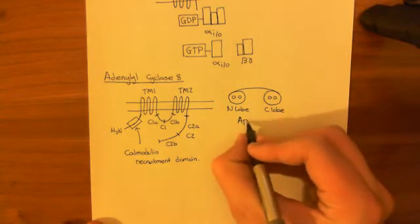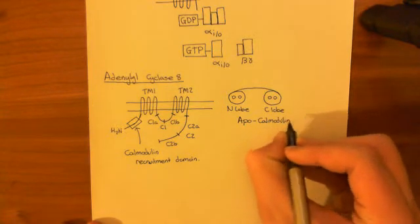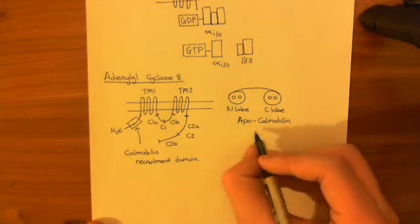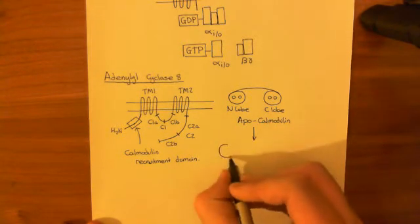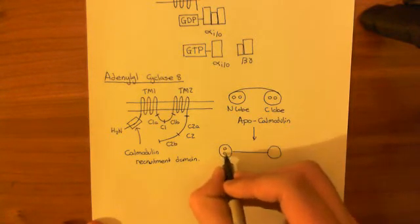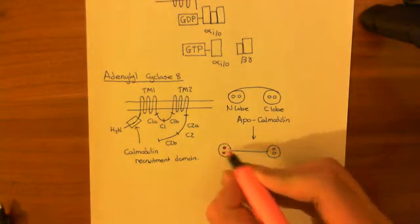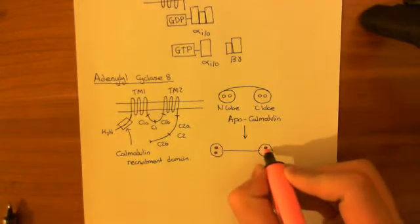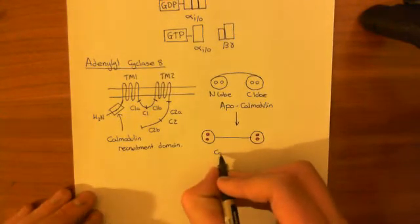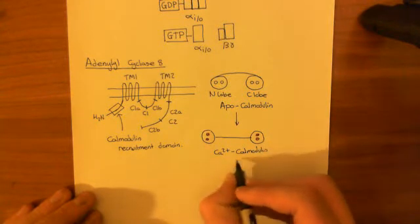This structure with no calcium bound to it is known as apocalmodulin. When calcium binds to calmodulin — when calcium binds in all four sites — calmodulin changes its structure to a more open, dumbbell structure. Calcium is now bound in these four pockets. This structure with calcium bound is now known as the calcium-calmodulin complex.